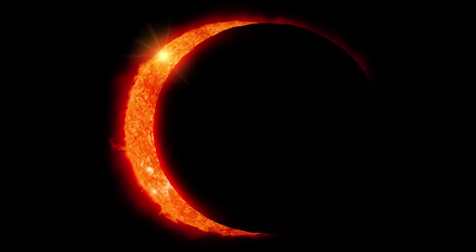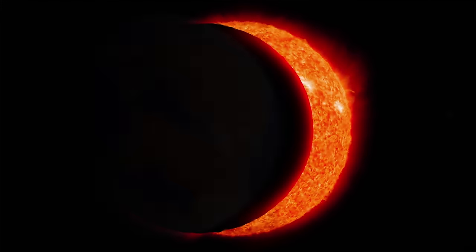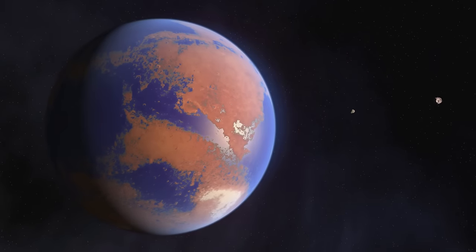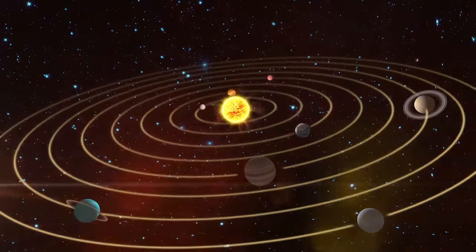Not only that, it is in the Goldilocks zone for that star. That's an area where liquid water could theoretically exist on the planet's surface. And Proxima Centauri is the closest star to our solar system. This is huge news!